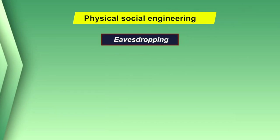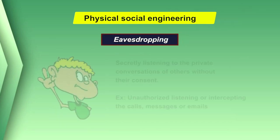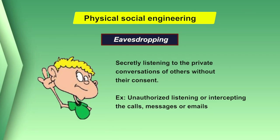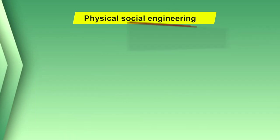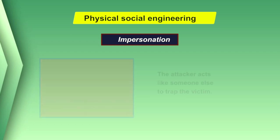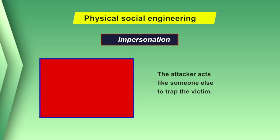Second is eavesdropping. The attacker can gain information by hearing a discussion between two people, or by reading emails and listening to telephonic conversations. Third is impersonation, where the attacker acts like someone else to trap the victim.